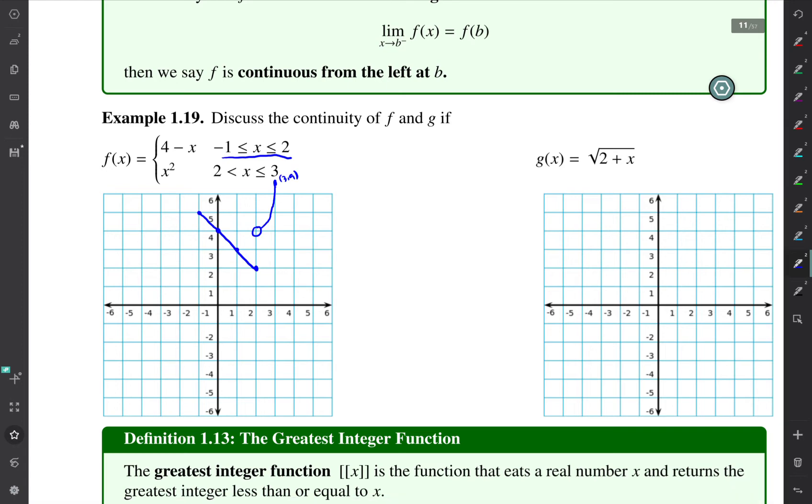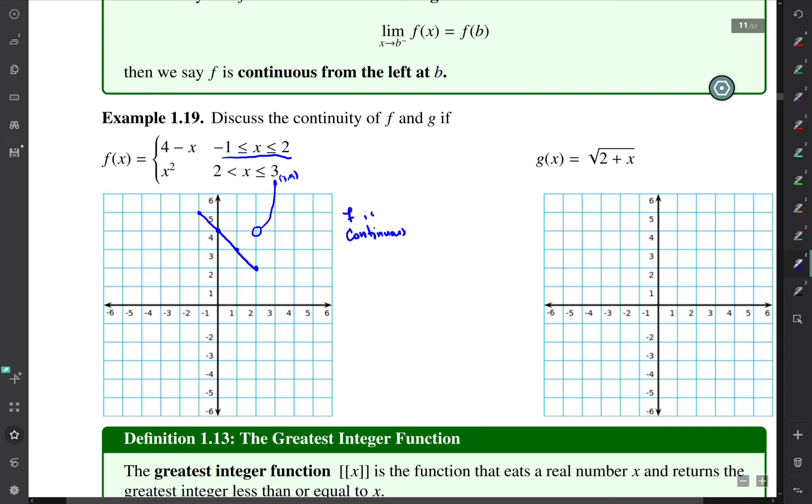It's the part of the domain where we're saying it's continuous. So we would say that this function is continuous f is continuous from negative 1 to 2 and from 2 to 3.